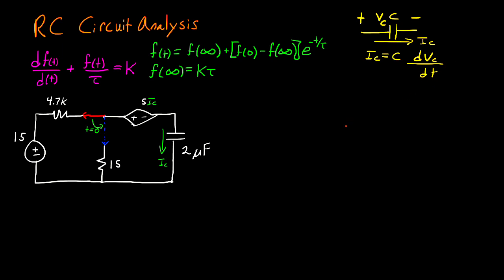Because of this, we're going to end up with a first order differential equation for the answer. The general form of that first order differential equation is where you have the derivative of a function plus that function divided by tau, which is a constant, is equal to a constant.